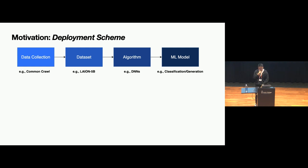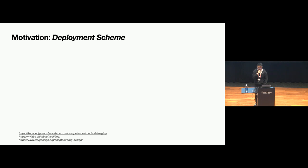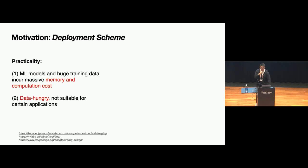This kind of deployment scheme or machine learning pipeline can also be called end-to-end deployment. What we argue here is that for this end-to-end deployment, it's not always feasible for some tasks. For example, checking the practicality of this kind of pipeline, we can see that to achieve good performance, we have to rely on big datasets and huge models, which makes the resource requirements very heavy.